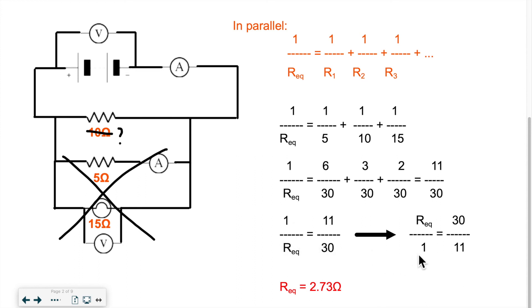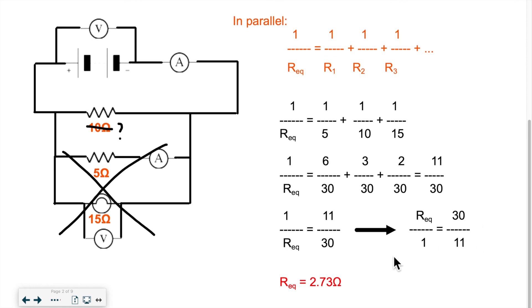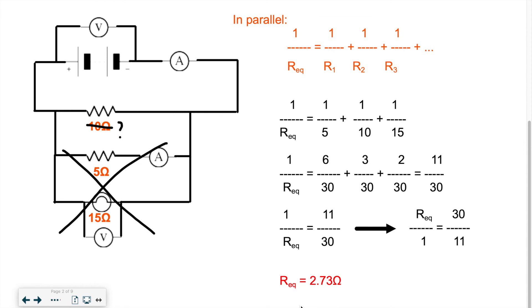So what we can do is flip the equation, so R equivalent goes on top, 30 goes on top, 11 goes at the bottom, or we can just cross multiply, 30 times 1 divided by 11, and that comes out to the same. So whether you cross multiply this version, or you flip the whole thing, and you calculate 30 divided by 11, you'll get the same answer. It just depends on what you're most comfortable with. And that would give you a resistance of 2.73 ohms.